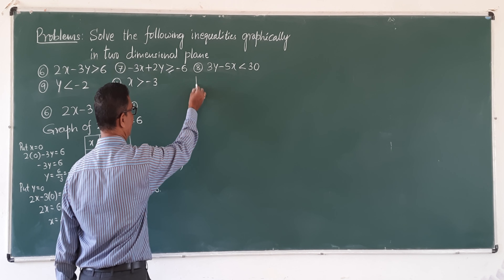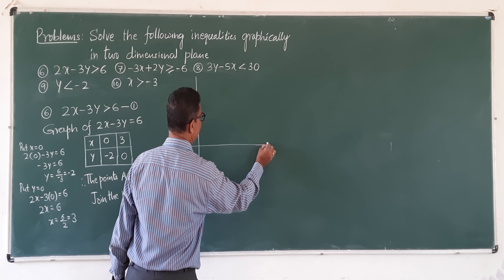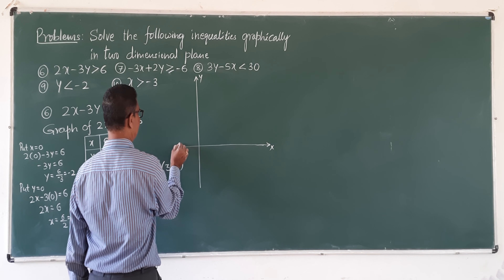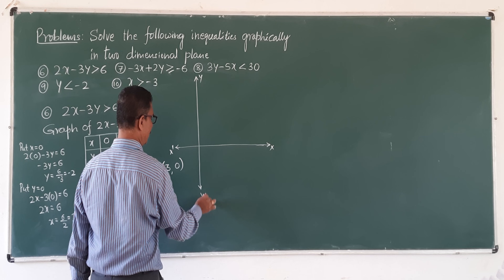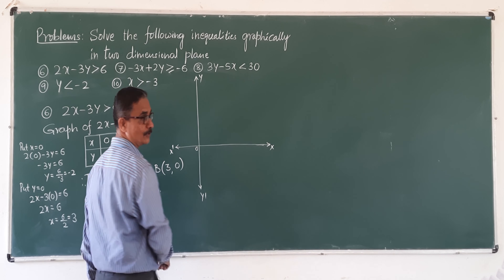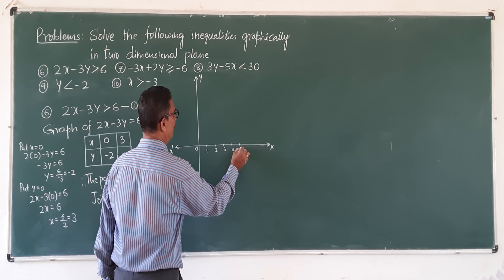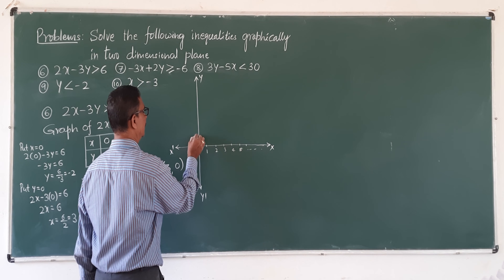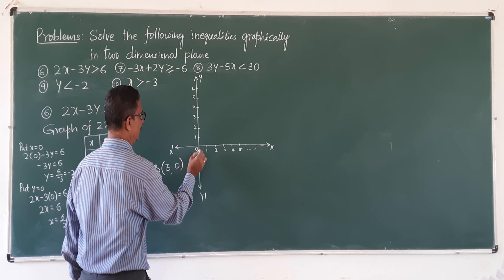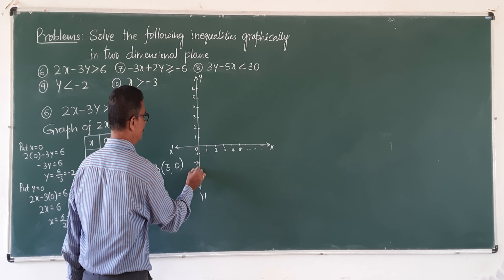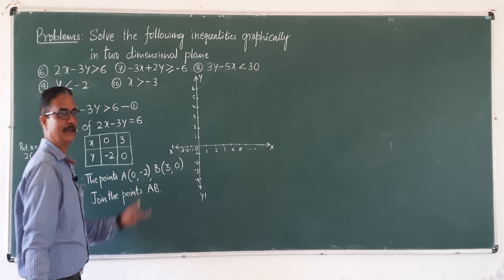Now here the graph: x-axis is the horizontal line, y-axis is the vertical line. Negative direction of x-axis, negative direction of y-axis, this is the origin. Right side positive numbers 1, 2, 3, 4, 5, 6 and so on. Downward negative numbers: minus 1, minus 2, minus 3, minus 4 and so on. Left side negative numbers: minus 1, minus 2, minus 3 and so on.